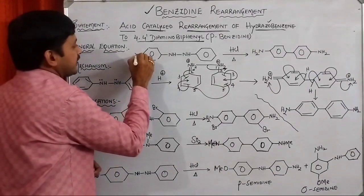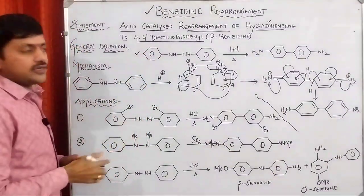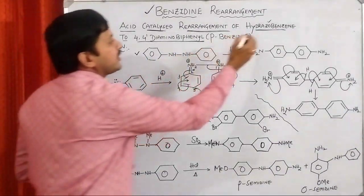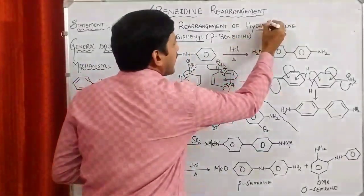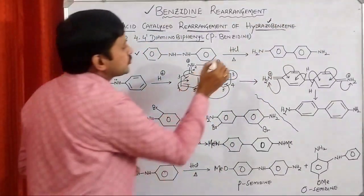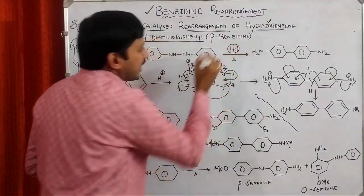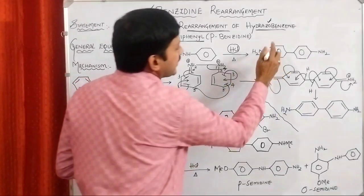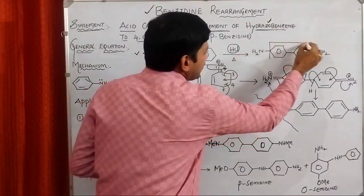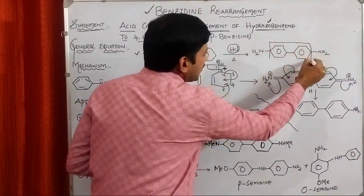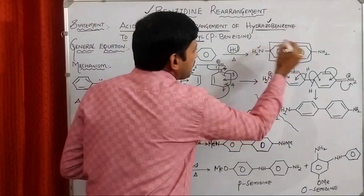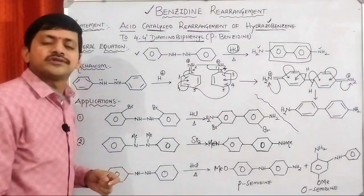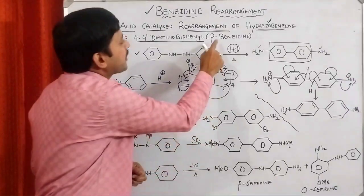Let's see the general equation. The reactant is hydrazobenzene: a phenyl ring–NH–NH–phenyl ring structure, commonly called hydrazobenzene. The hydrazobenzene is subjected to an acid-catalyzed reaction. Thereby, what we are getting is a biphenyl moiety. At the para position of the biphenyl moiety, we are having two amino groups — that's why it is commonly called parabenzidine.